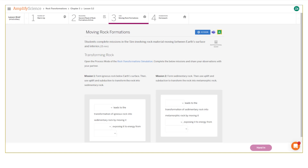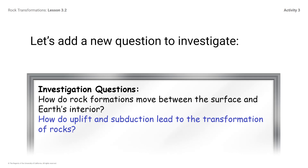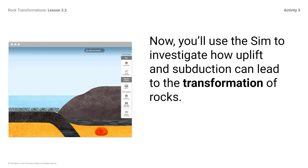Here's what your student screen looks like for this part of the lesson. Let's add a new question to investigate: How do rock formations move between the surface and Earth's interior? We add: How do uplift and subduction lead to the transformation of rocks? You have learned that uplift and subduction can move rock formations between the surface and Earth's interior. Now you'll use the sim to investigate how uplift and subduction can lead to the transformation of rocks.